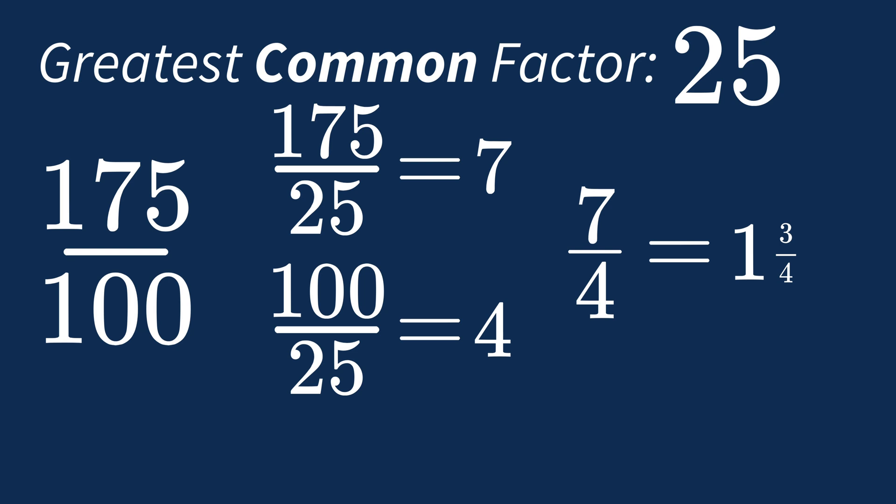So 1.75 can be written as 7 over 4 as a fraction, and 1 and 3 quarters as a mixed fraction.